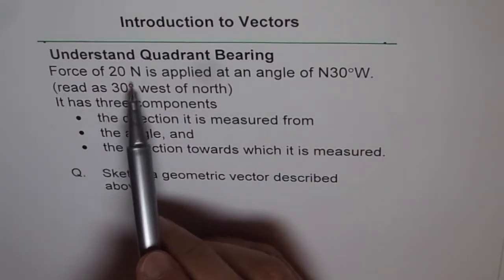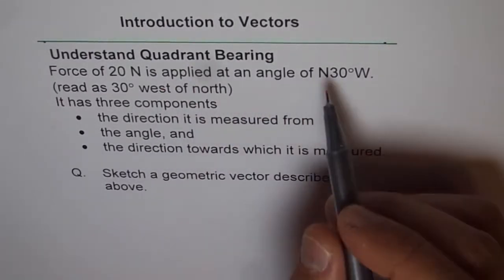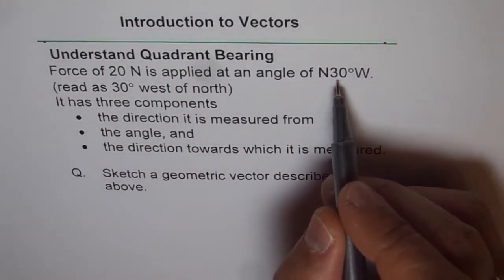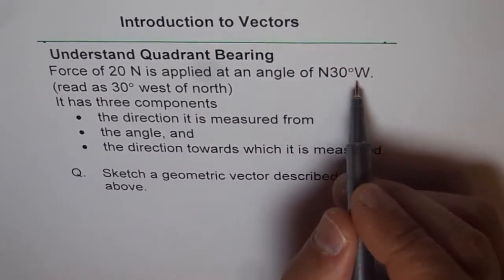Force of 20 Newton is applied at an angle of, so we read like this, 30 degrees west of north. That is how it is to be read.